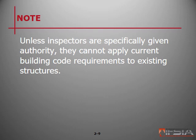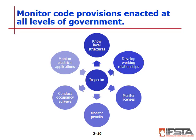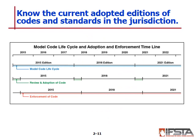Unless inspectors are specifically given authority, they cannot apply current building code requirements to existing structures. Inspectors must know the adopted editions of codes and standards in their jurisdiction. Codes may be created locally, such as a zoning code regulating advertising sign sizes. Most model codes are revised on a regular basis, typically every three to five years. Revisions do not take effect unless the AHJ legally adopts the new edition, so it is a good idea to hold onto copies of older codes.